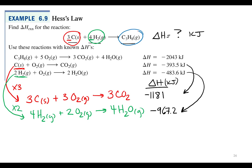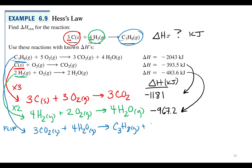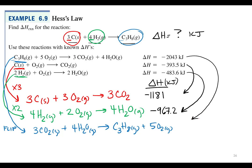Now we need to find propane. Propane appears in the first equation with the correct number of moles (1 mole), but it's a reactant there, whereas we need it as a product in our overall equation. So we flip that equation: 3 moles of CO₂ plus 4 moles of water produce 1 mole of propane plus 5 moles of O₂. Since we flipped the equation, we change the sign of the enthalpy: −2043 kJ becomes +2043 kJ.